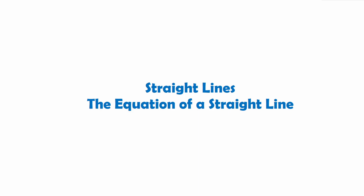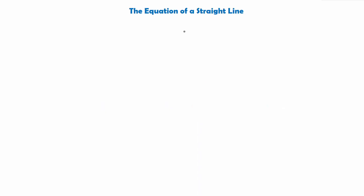In today's video we are going to continue our topic on straight lines and move on to talk about the equation of a straight line, which we touched on at National 5. We're going to put a few of the facts we have learned in the last few videos and so far on our higher side of straight lines into action. At National 5 we said that the equation of a straight line is given by the formula y equals mx plus c.